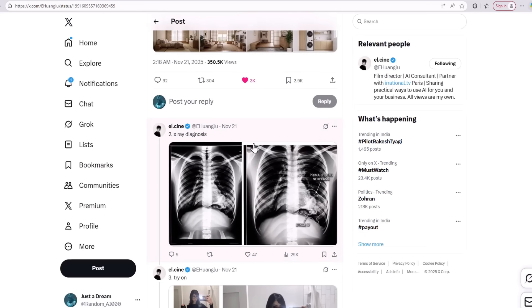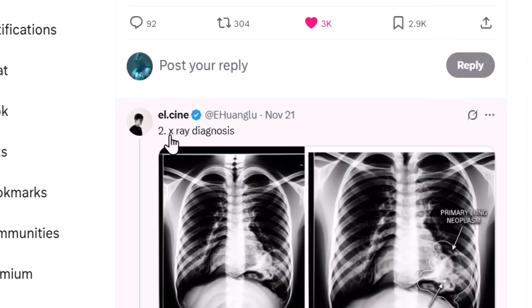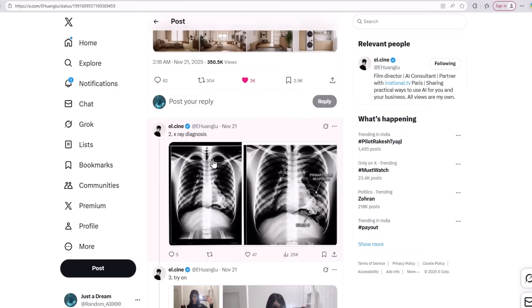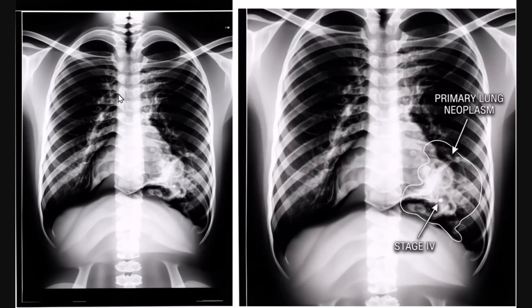One of the craziest use cases of the Nano Banana Pro AI model is that it can do X-ray diagnosis. If you provide an image of an X-ray of the human body, it can easily find out the disease, if there is any, from that specific X-ray. This was the provided image, and the AI model was able to point out the disease, tell us its name — primary lung neoplasm — and also mention the stage, which is stage 4. This is quite an interesting use case, but we need to look into how accurate this diagnosis actually is.